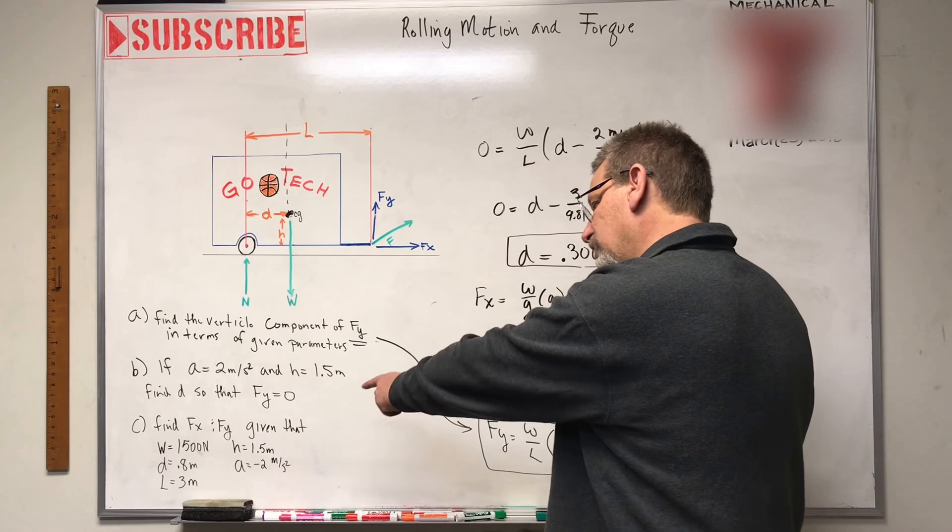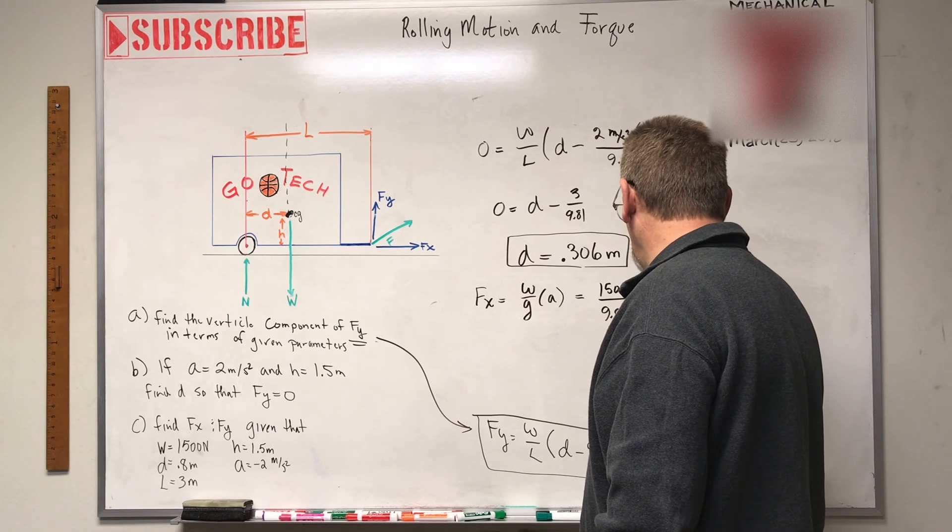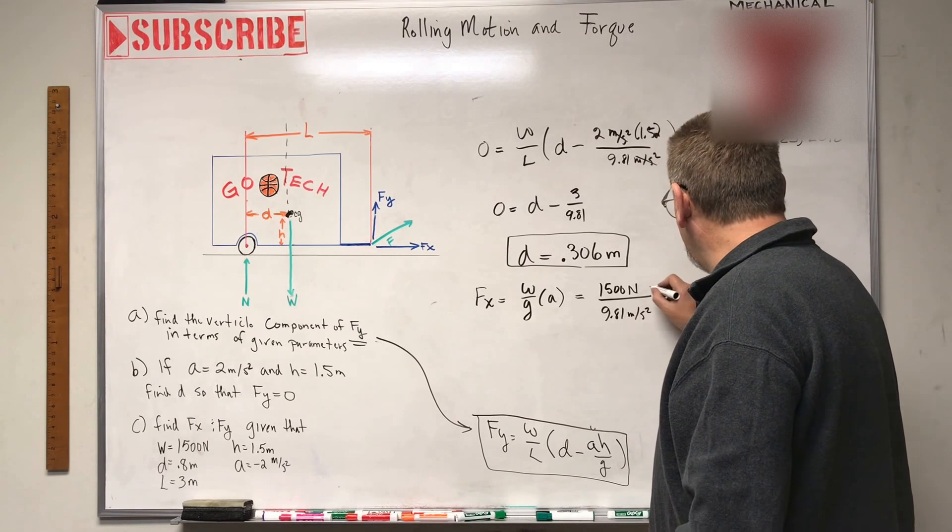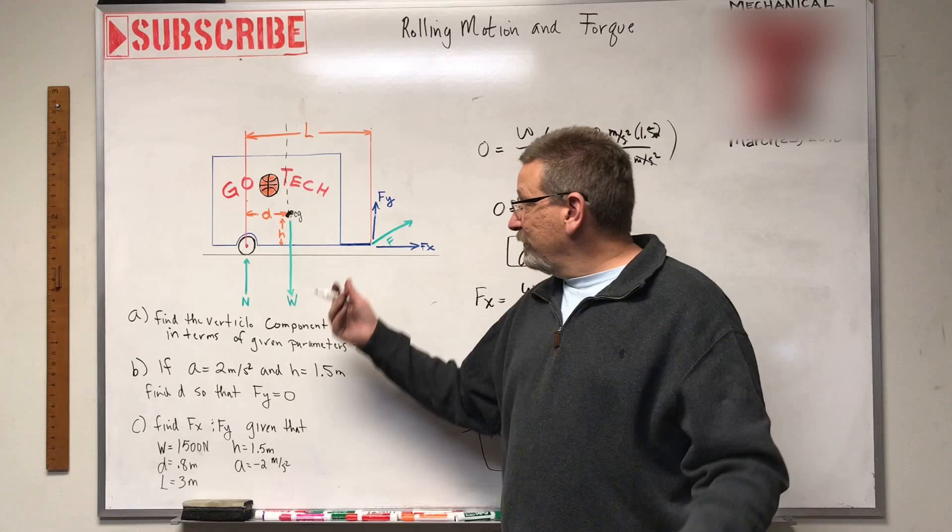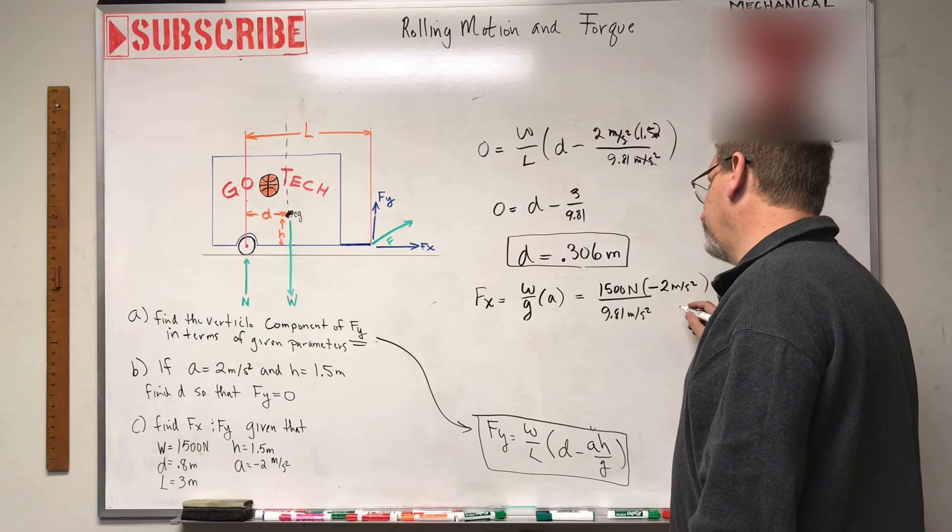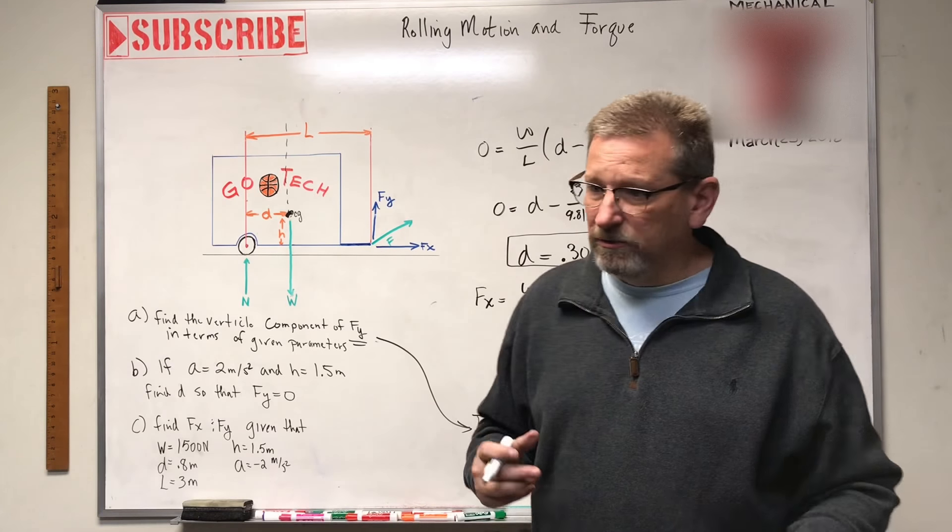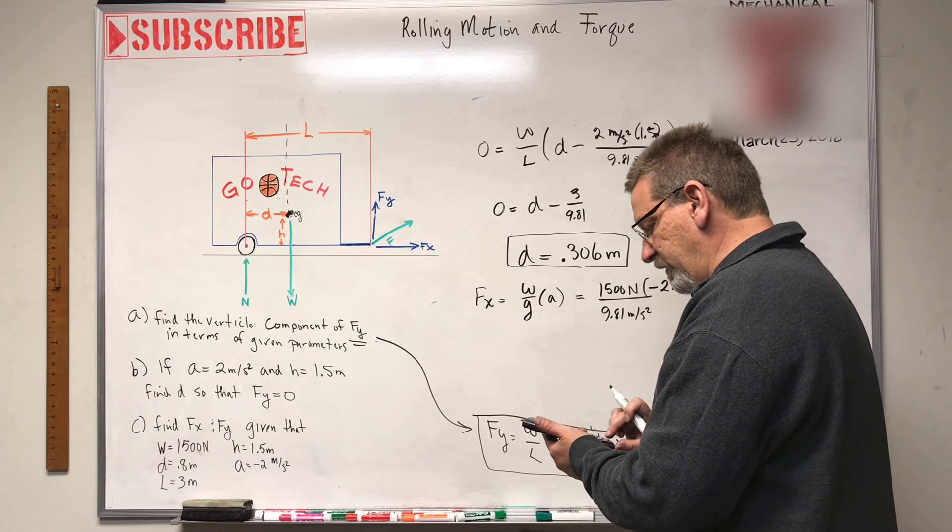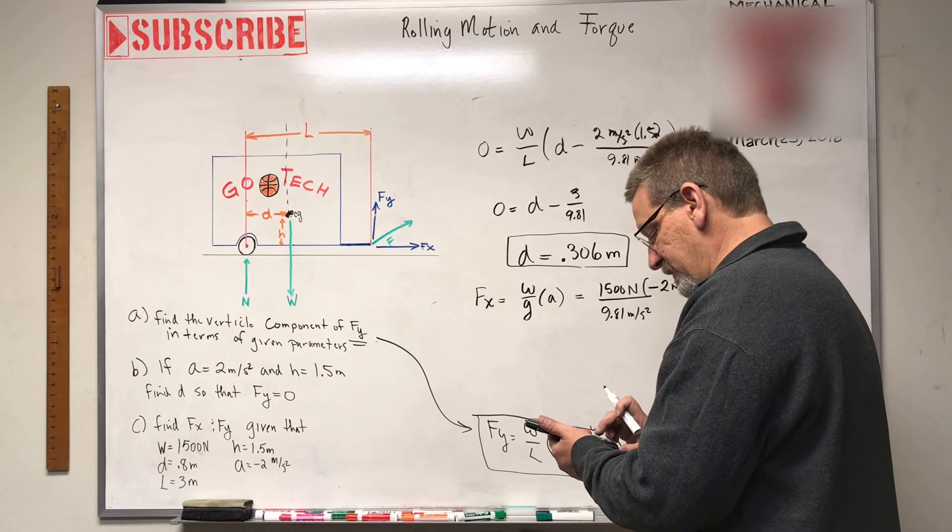So here we go. Fx, is that hard to do? W, 1,500 newtons. G, 9.81 meters per second squared. A. A. A. What is A? Minus 2 meters per second squared. Now what does that mean if the acceleration is minus? The dude pulling the trailer stepped on the brakes, right? Now he's slowing down at a constant rate. A constant acceleration. Okay, so let's see. That's it. Calculator. I can't keep up my calculator, y'all. And I've got 1,500 times 2 times 2 divided by 9.81.